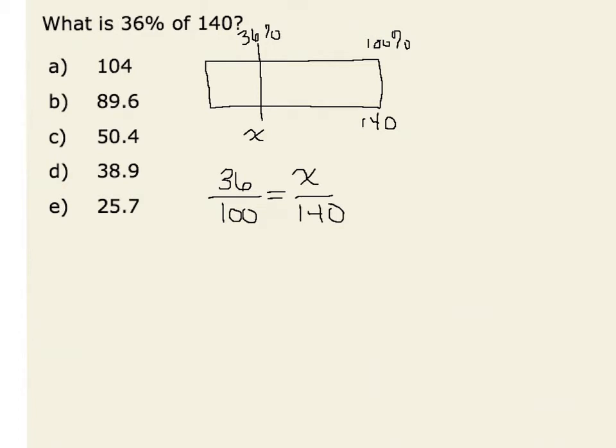One thing that we would recognize is 36 divided by 100, or 36 hundredths, is equivalent to the decimal 0.36, and that is equal to x over 140. We could now multiply both sides by 140, resulting in the equation x is equal to 0.36 times 140.